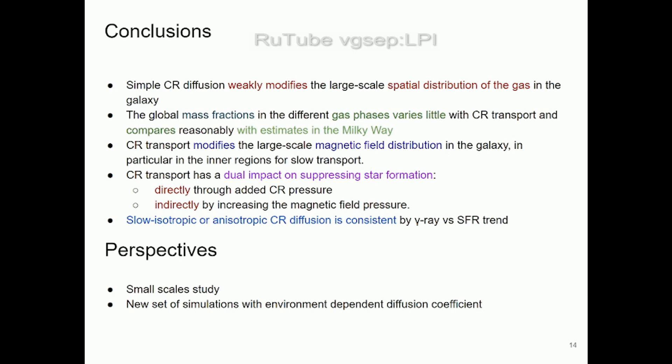We're planning to extend this study with detailed small-scale analyses and by adding a diffusion parameter that is not global but depends on local ISM properties, which is probably more realistic to what's actually happening in the galaxy. Thank you.